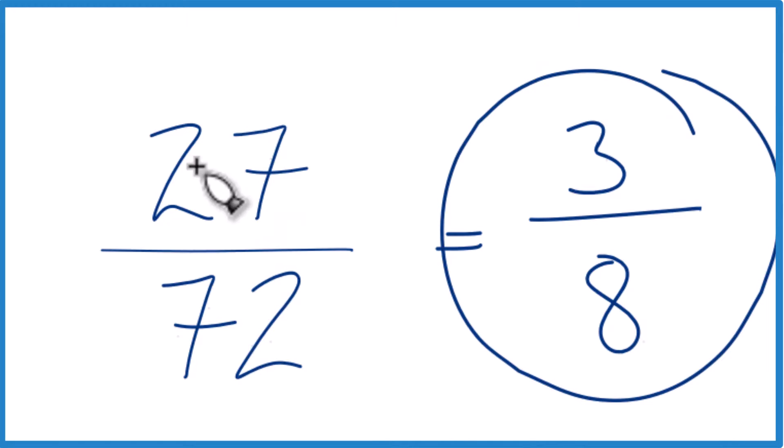This is Dr. B, simplifying 27/72 down to lowest terms. Thanks for watching.